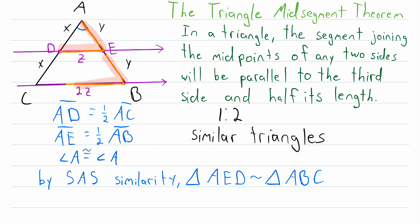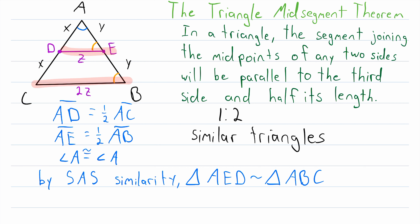Are these two angles congruent? Yes they are, because similar triangles have congruent corresponding angles, and angle AED corresponds to angle ABC. Since they are corresponding angles in two similar triangles, angle AED is certainly congruent to angle ABC. Therefore, by the converse of the corresponding angles theorem, since a pair of corresponding angles created by transversal AB are congruent, we know that these two lines are parallel. And thus, in conclusion, since the lines containing these line segments are parallel, we also know that these two line segments are parallel.